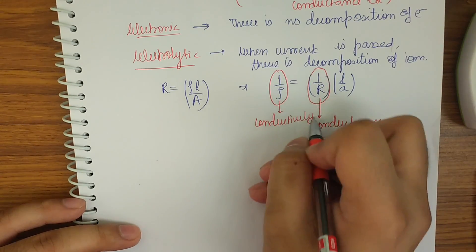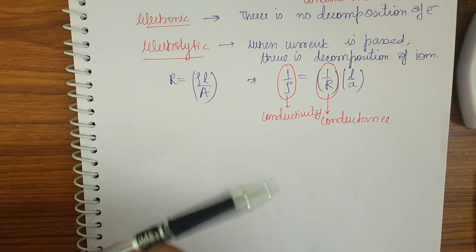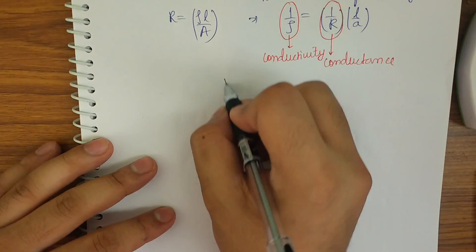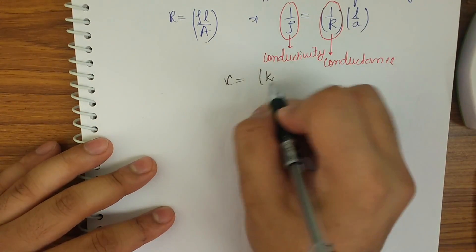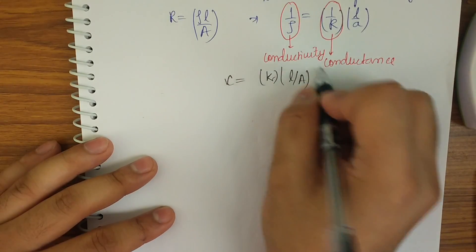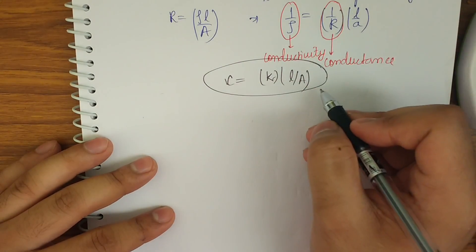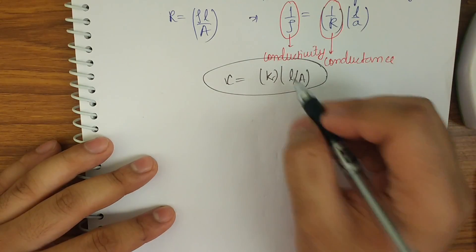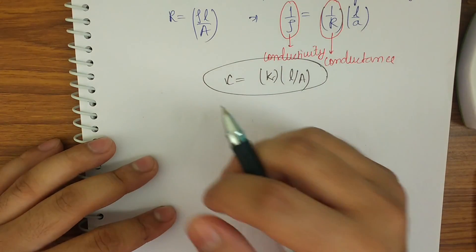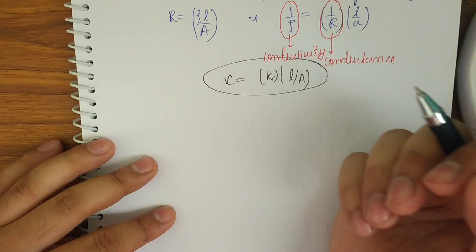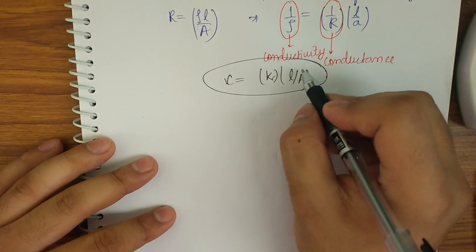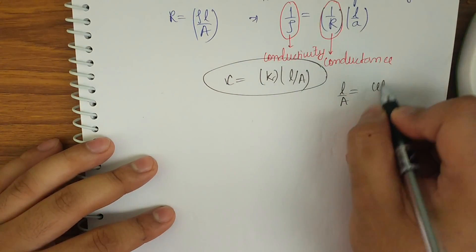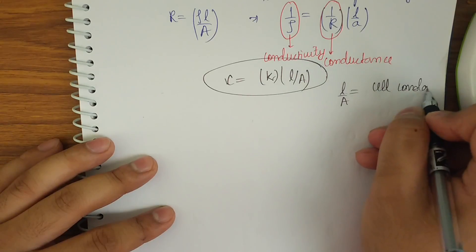I will denote conductivity by k and conductance by C. So the formula generalizes to C = k × (l/A), where l is the length and A is the area. We can see that l/A is a particular constant we get for a cell, since that ratio must be constant — so l/A is known as the cell constant.